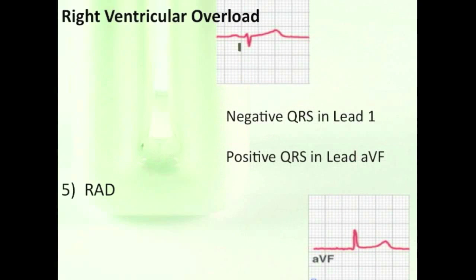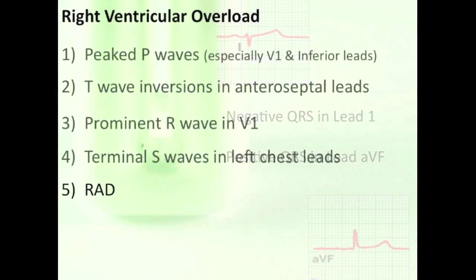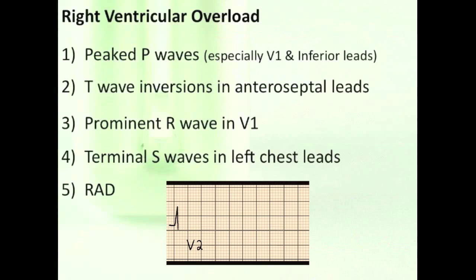So if you suspect right ventricular overload in a patient, I would look first at lead V1, because it can tell you a lot, like peaked P waves, T wave inversions, or a prominent R wave.